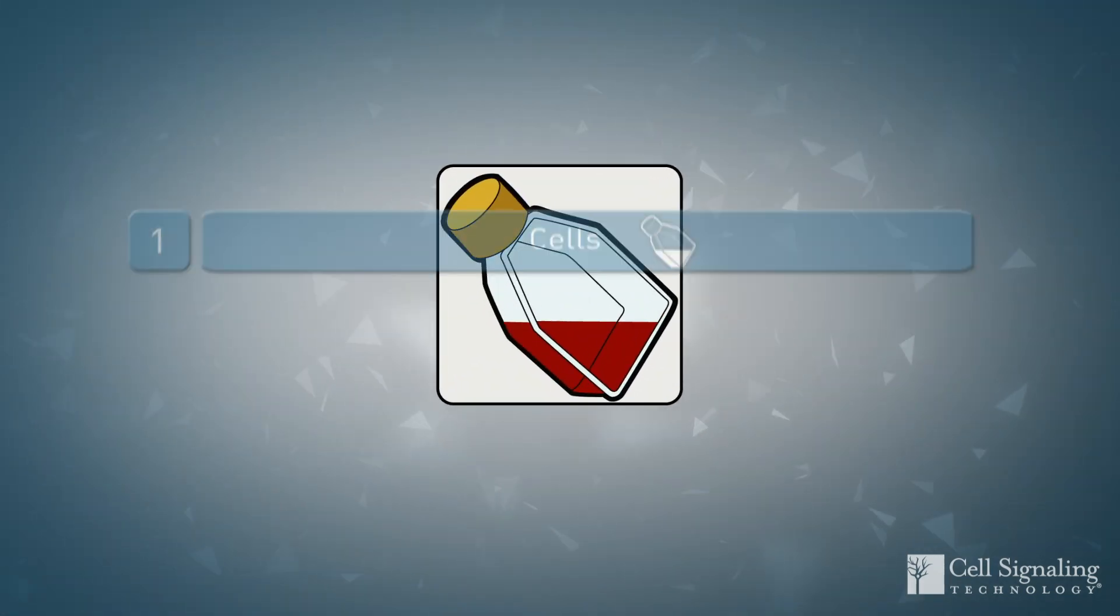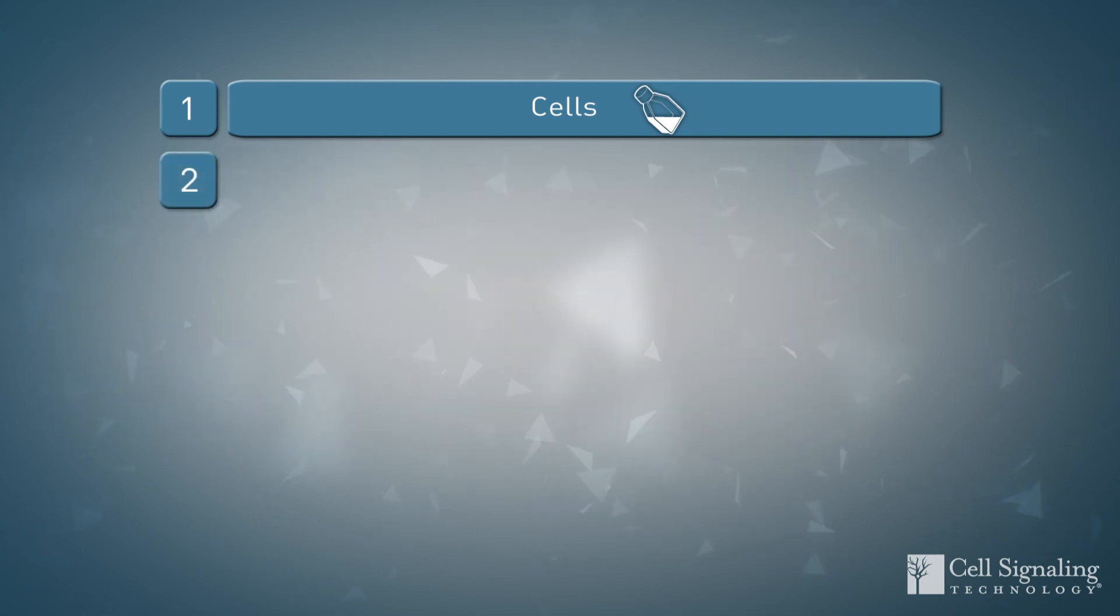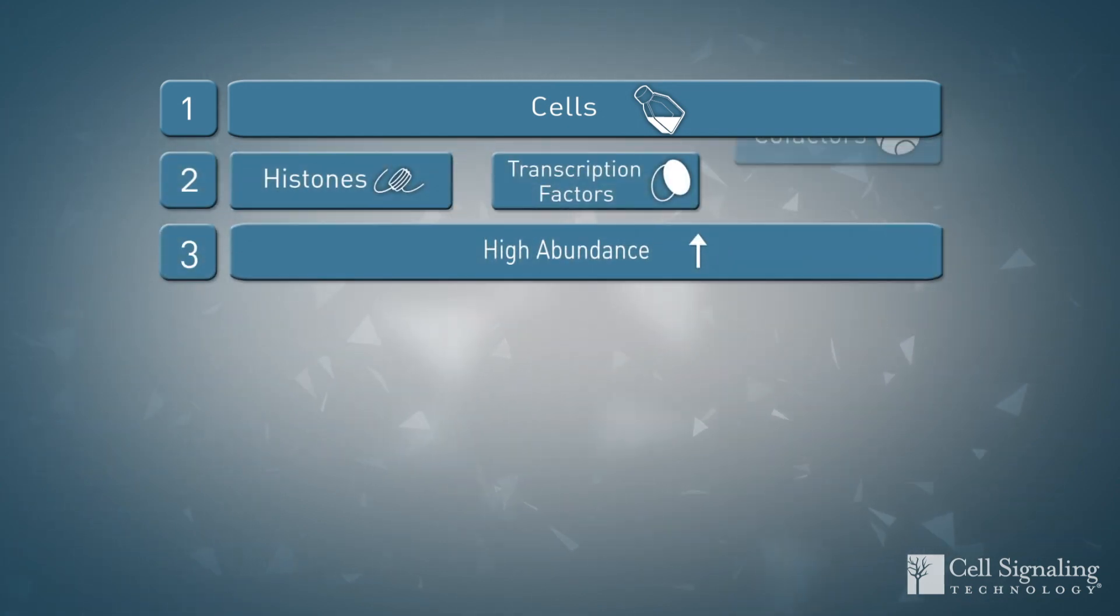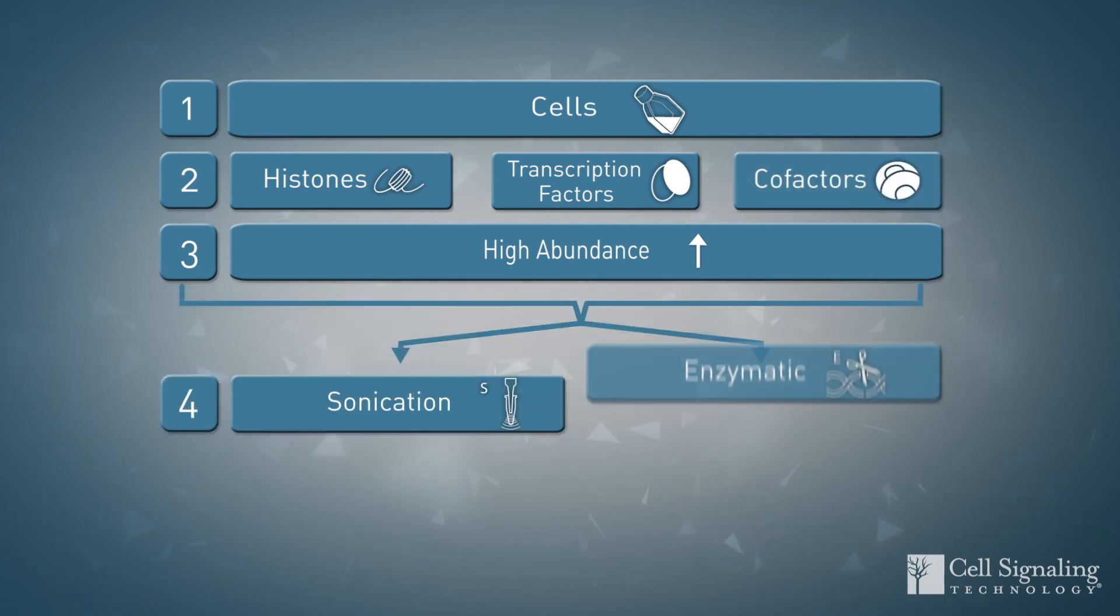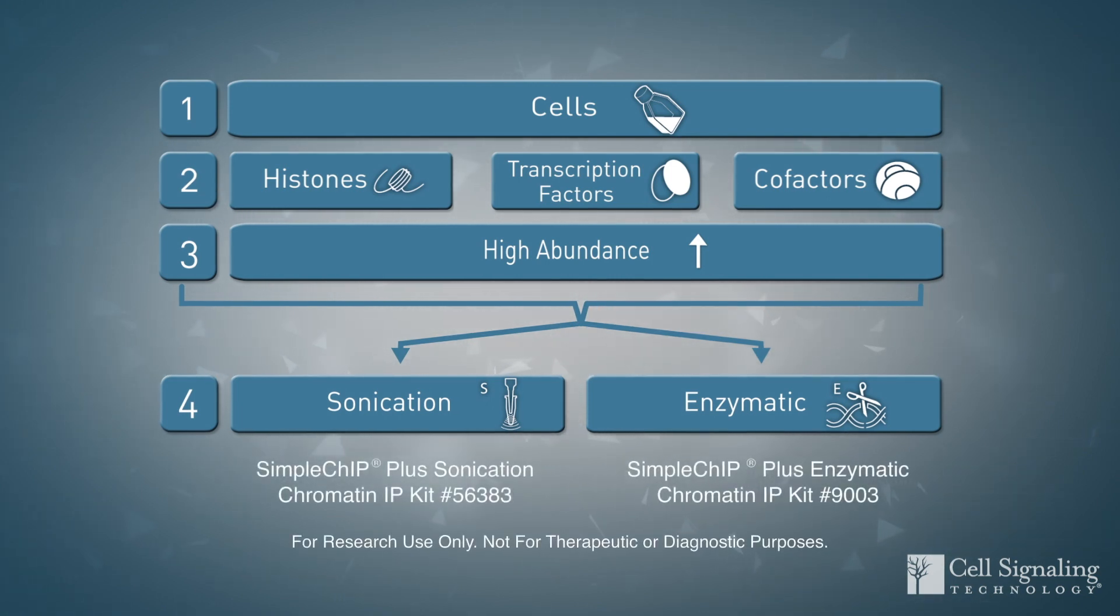Let's walk through the scenario in which your input samples are cells. If you are looking at histones or high abundance transcription factors or cofactors, both sonication and enzymatic digestion work well. Select a SimpleChIP kit based on your chromatin fragmentation preference.